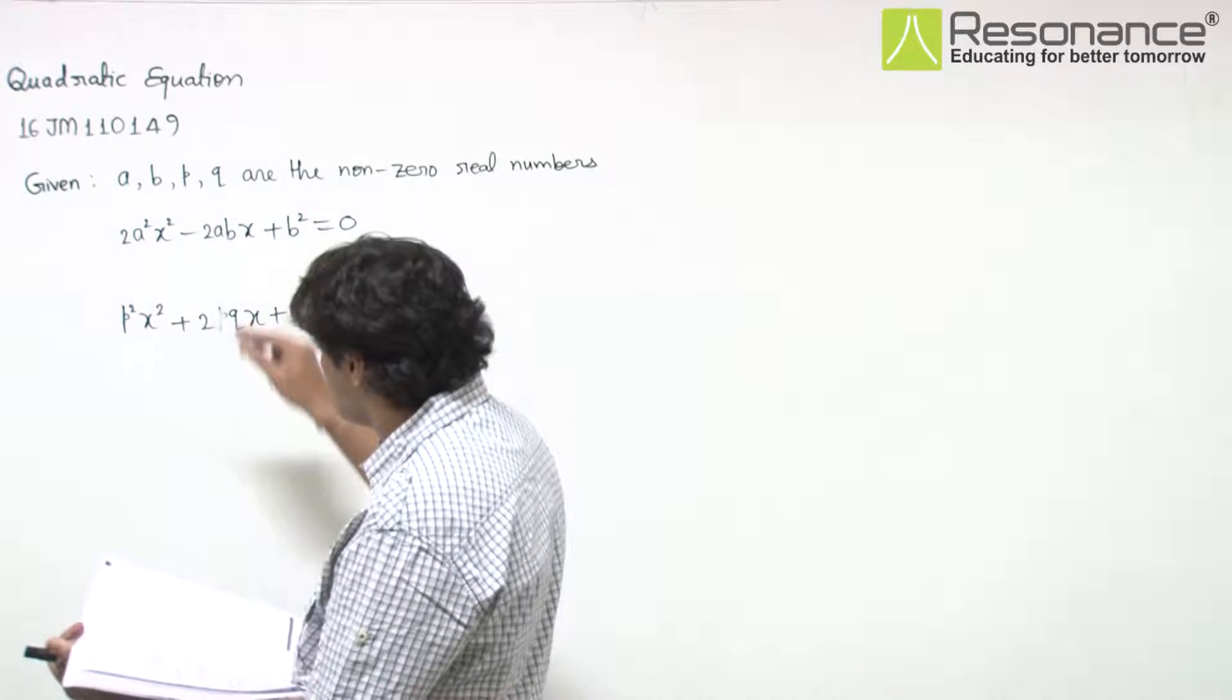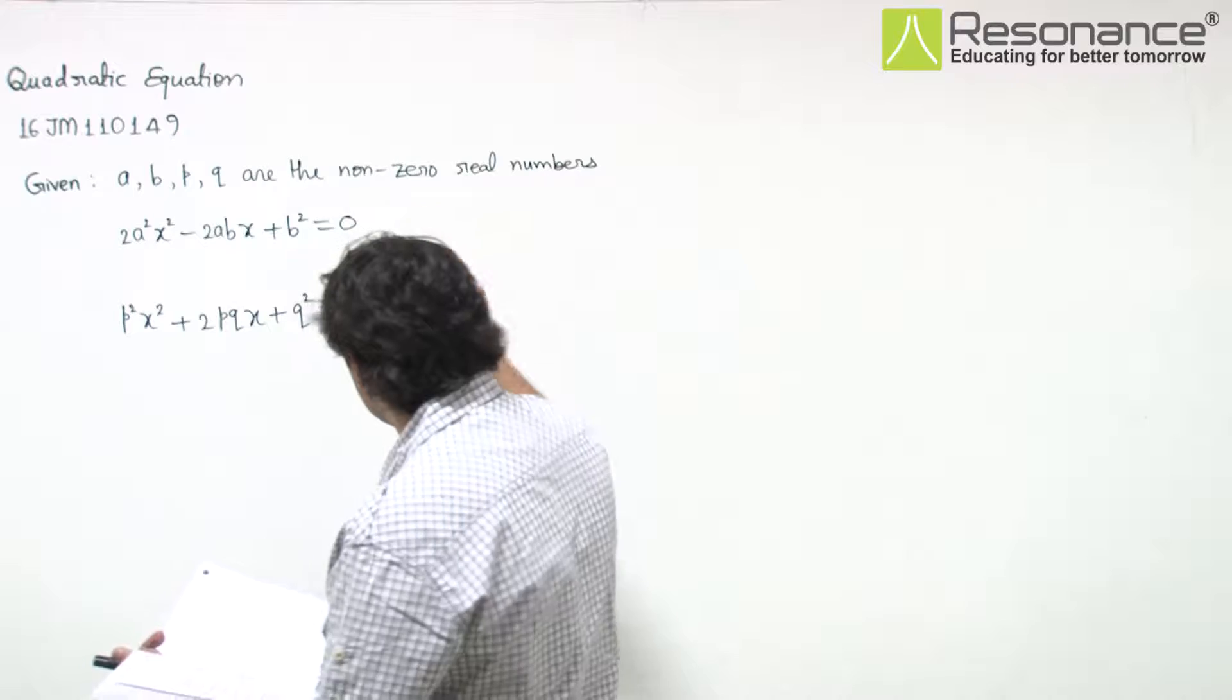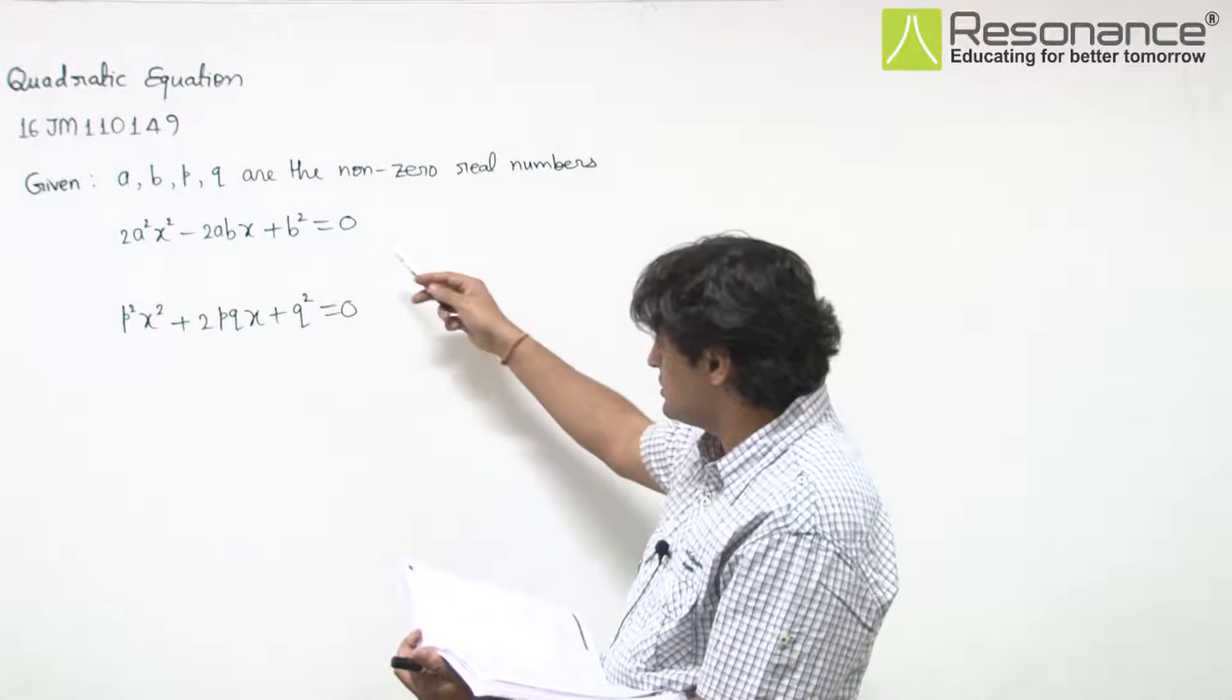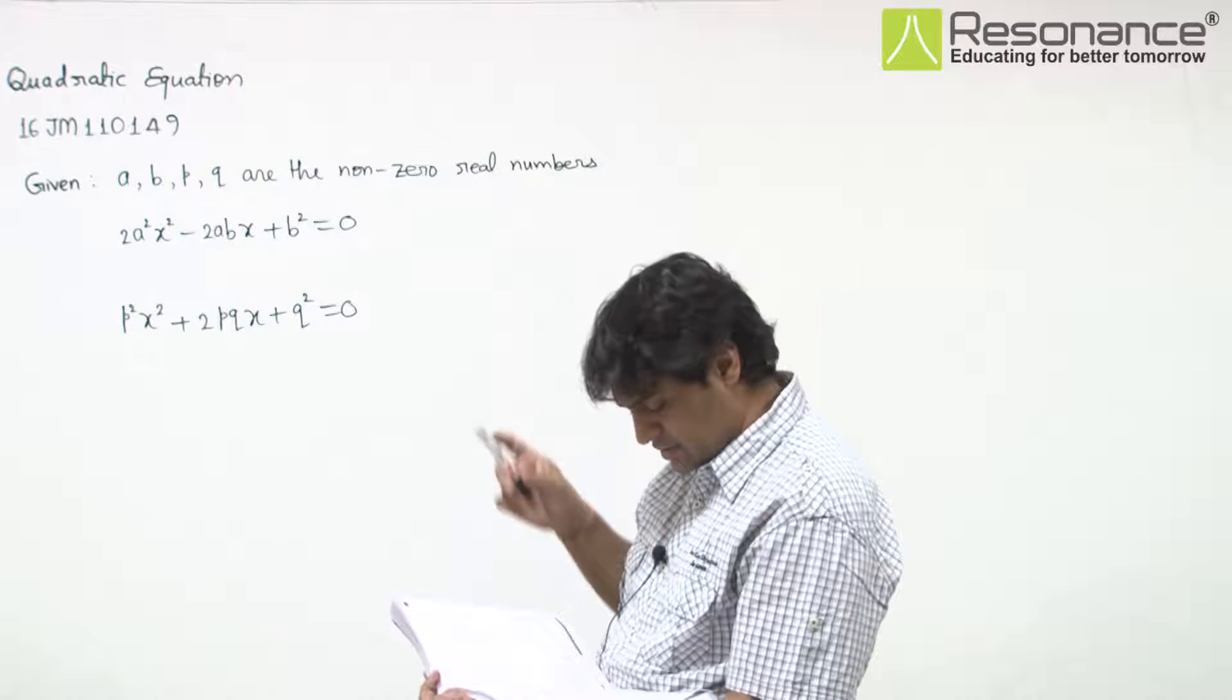In this question, we are given that a, b, p, q are non-zero real numbers. Then these two equations: first equation is this, second equation is this.